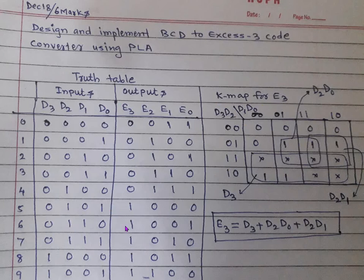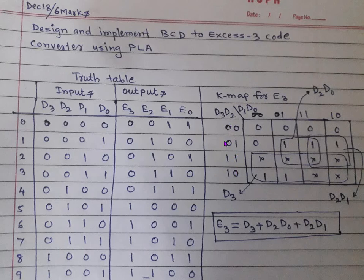Now for the KMAP for E3: fill up the KMAP with help of the truth table. For input 0000, E3 is 0. After filling and grouping, for the first group D1 and D0 don't appear, D2 varies so it doesn't appear, and D3 equals 1, giving term D3. For the second group D3 doesn't come, D2 is 1, D0 is 1, giving D2·D0. The third term is D2·D1. So the reduced expression for E3 is D3 + D2·D0 + D2·D1.